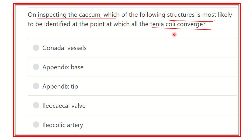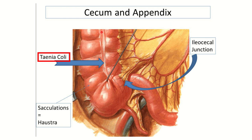In this picture we can see the cecum and appendix. This is the cecum, and here we can see the longitudinal muscle bands known as the taenia coli. There are three taenia coli present — here, here, and here — and we can see the junctional point where they converge, which is located at the appendix.